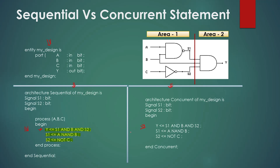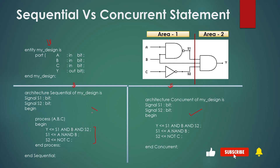Now if you are simulating these two architectures in the simulator, think about the output of both. The right answer is: when you simulate both architectures, the right-side architecture executing statements concurrently will give you the correct results, but the left-side architecture executing statements sequentially will not give you the correct answer — you will get different results. With concurrent statements you will get the correct results, and with the sequential statements you will get the wrong results, because you did not follow the right sequence of statements.